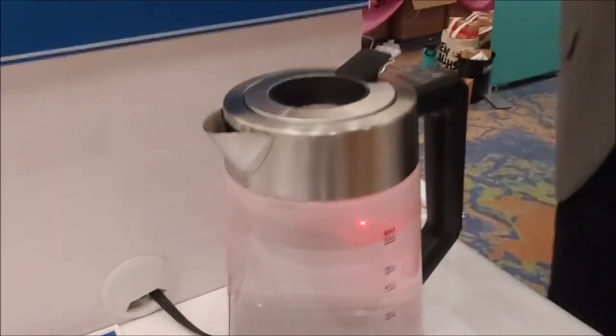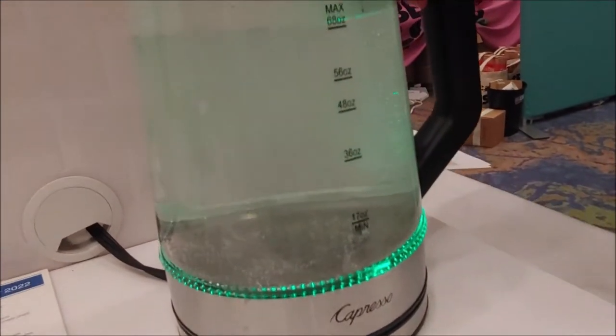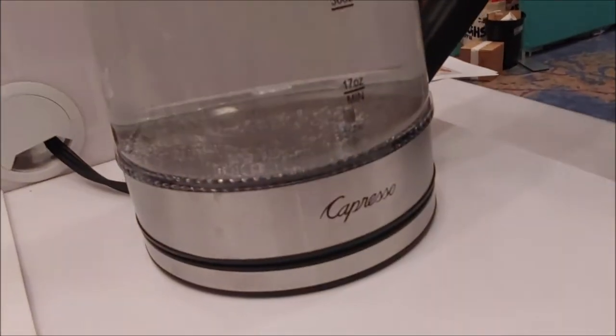Okay, two things I like: Capresso and LEDs. So Anthony, what do we have here? This is the H2O Glass Select, and this is an electric water kettle. As you can see, it illuminates with every temperature change. Oh my goodness, so when it cycles through it will turn on.